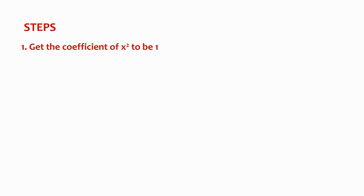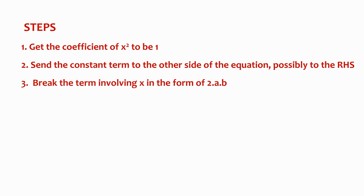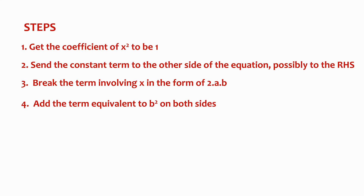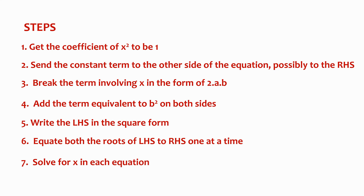To summarize, following are the steps involved in solving a quadratic equation by completing the square method: 1. Get the coefficient of x² to be 1. 2. Send the constant term to the other side of the equation, preferably to the RHS. 3. Break the term involving x in the form of 2ab. 4. Add the term equivalent to b² on both sides. 5. Write the LHS in the square form. 6. Equate both the roots of LHS to RHS one at a time. 7. Solve for x in each equation.